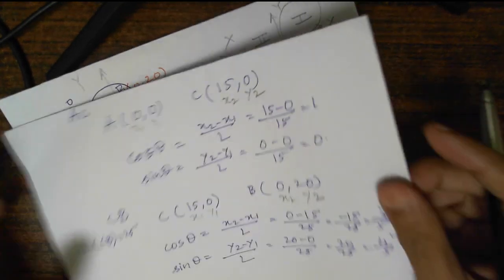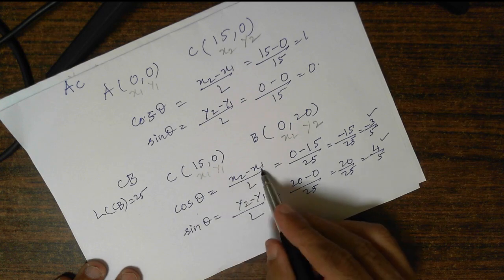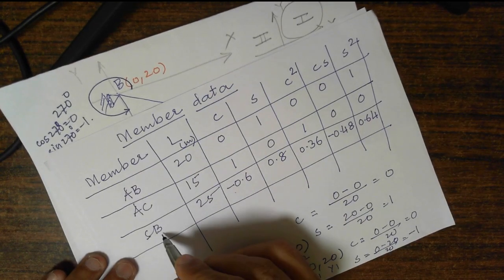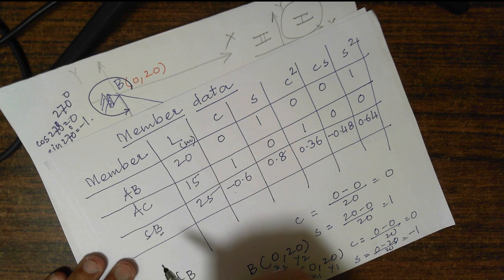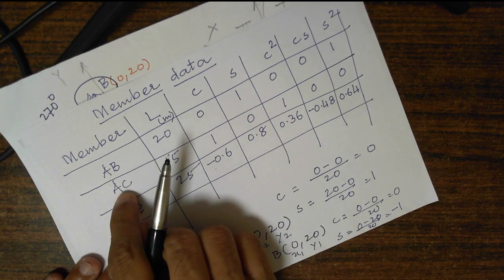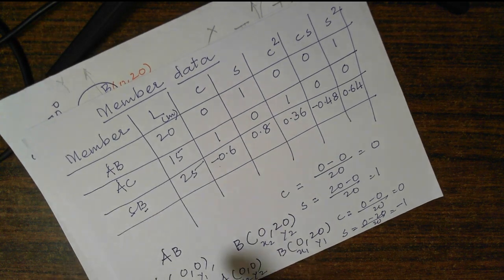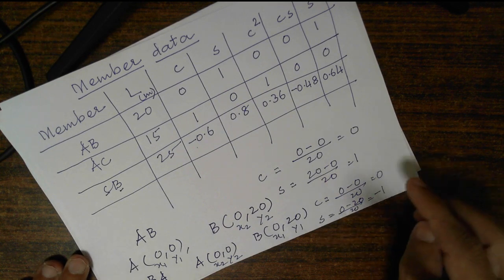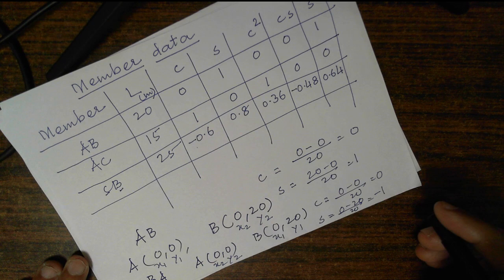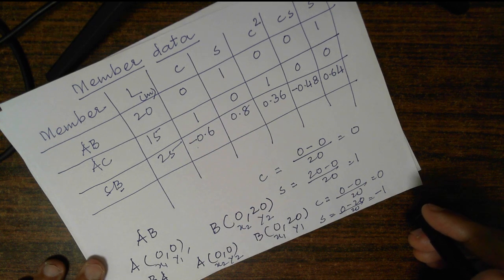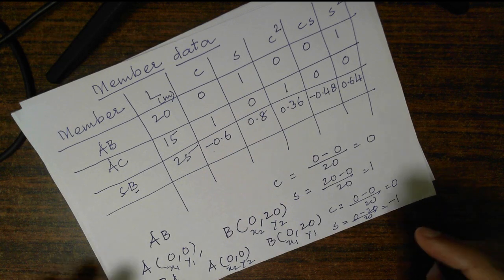By simply doing mechanical calculations — cos θ = (x2 - x1)/L and sin θ = (y2 - y1)/L — where (x1, y1) are the coordinates of the first point and (x2, y2) are the coordinates of the second point, we avoid all angle measurement errors. Naming the members — whether CB or BC, AC or CA — makes a lot of difference in the calculation. In our next discussion we will analyze one full problem regarding analysis of indeterminate truss using the truss element stiffness matrix. Thank you.